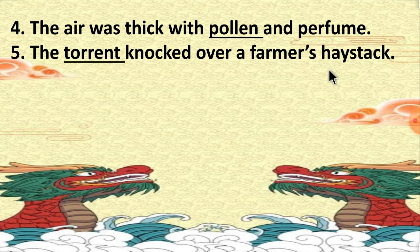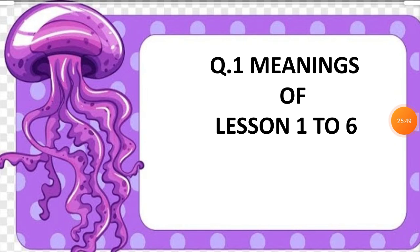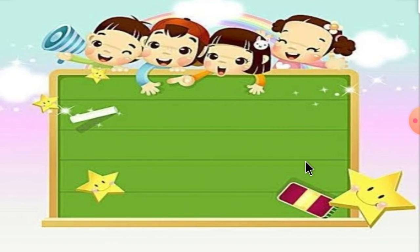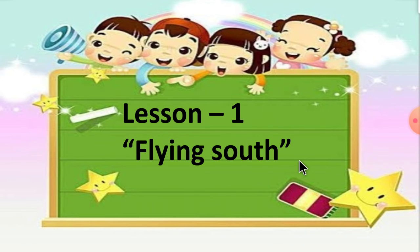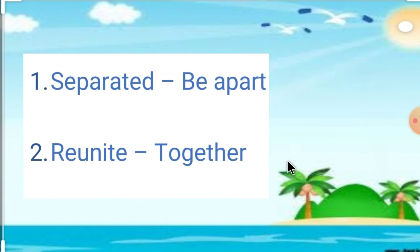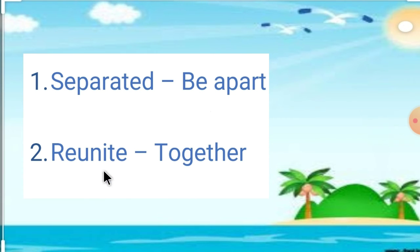My dear students, today we will do two questions only. I am repeating Question 1 and Question 2. Lesson 1: Flying South — Separated means 'be apart'; Reunite means 'together'; Injured means 'hurt'; Goose means 'a bird'; Ensured means 'make sure'.